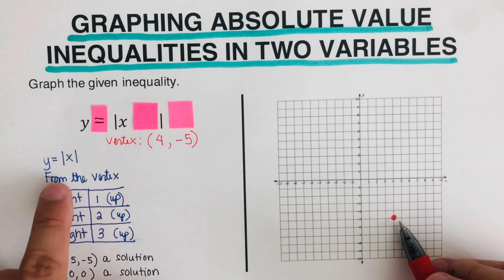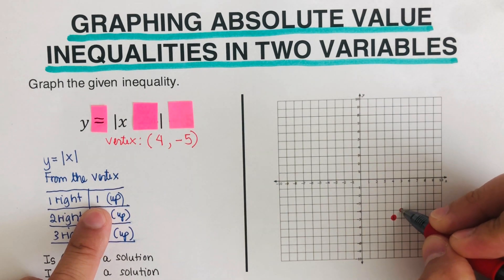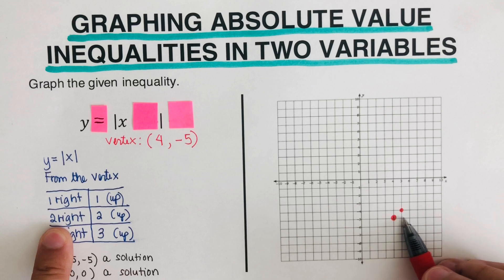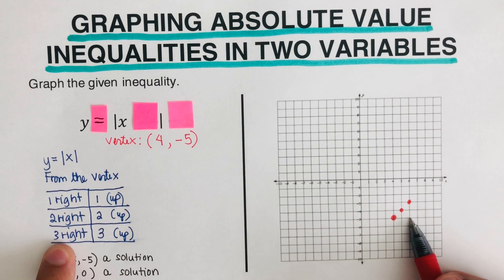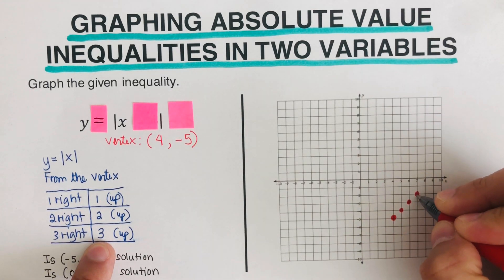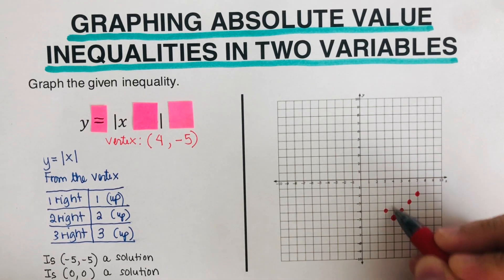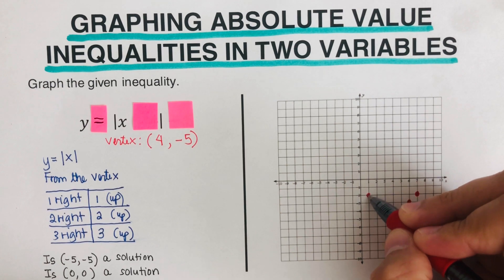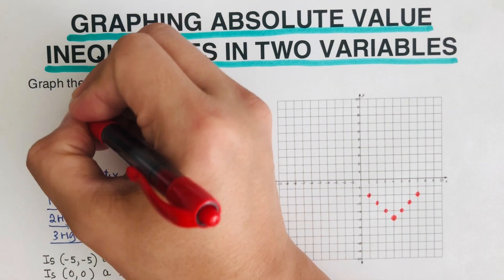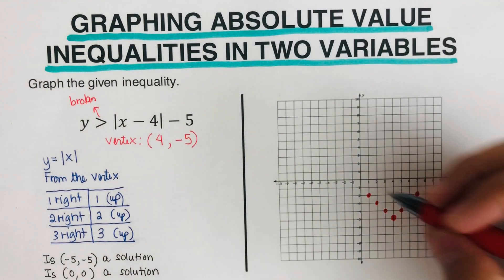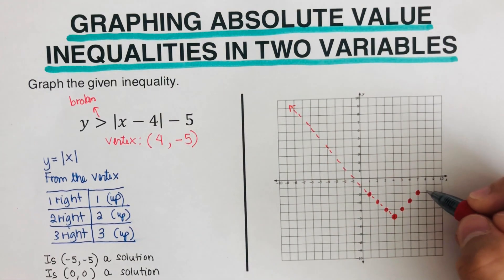From the vertex, we sketch the next dots. One step right then one step up gives the next dot. Two to the right, two up gives the next dot. Three to the right, three up gives the next dot. Since this is an absolute value, we draw the same dots mirrored across the line of symmetry, forming a letter V. Since there's no bar underneath the inequality symbol, we use a broken line connecting the dots, which extends to infinity.